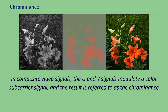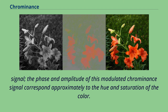In composite video signals, the U and V signals modulate a color subcarrier signal, and the result is referred to as the chrominance signal. The phase and amplitude of this modulated chrominance signal correspond approximately to the hue and saturation of the color.